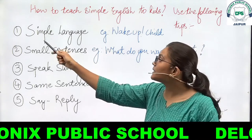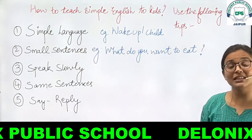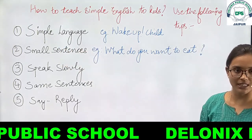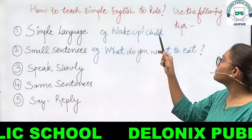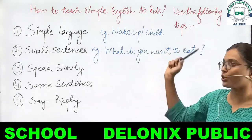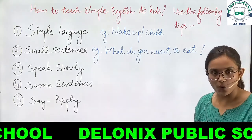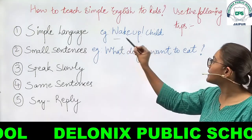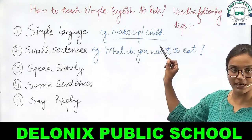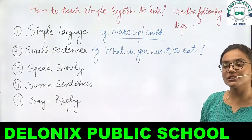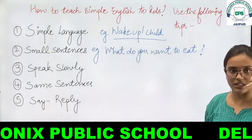The first tip is simple language. Baccho ke saath hamesha bohati simple language ka ishtamaal karna chahiye. For example, 'wake up child' — beta uht jao. Agar hum chhote-chhote sentences jo ki bohati simple language mein use karein, to baccha unko learn bhi karta hai aur words ke meaning ko samajhta bhi hai.